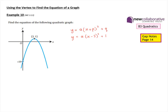We can use the other piece of information given here, which is that the y-intercept of the graph is y = -19. The y-intercept occurs when x = 0, so we substitute those values into our equation and we get: -19 = a multiplied by (0 - 2)² + 1, which simplifies to -19 = 4a + 1.